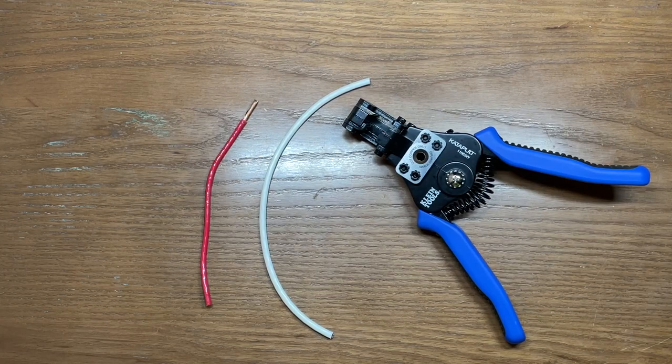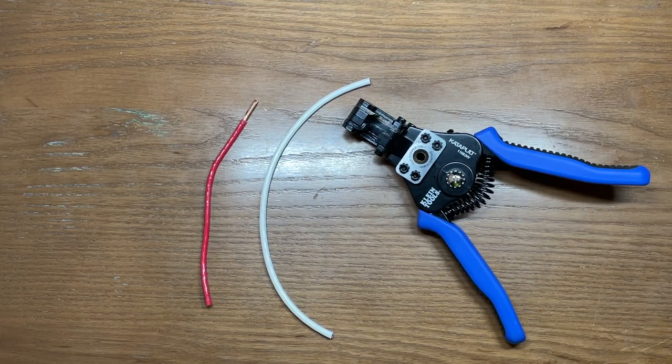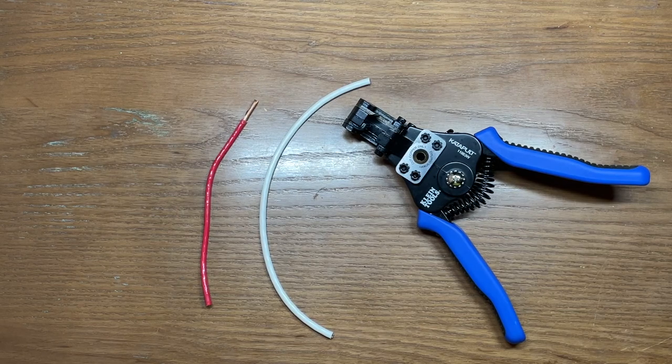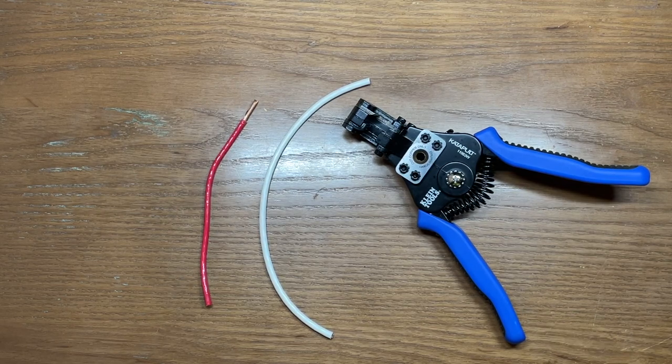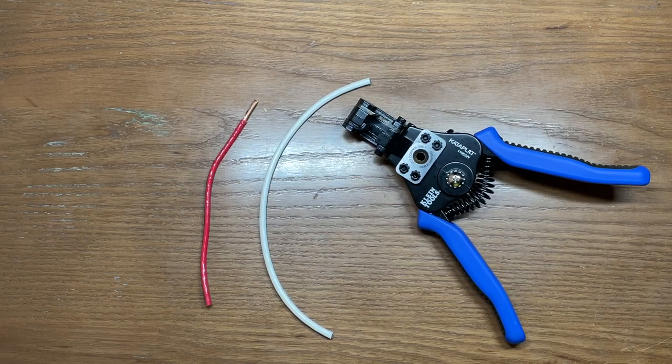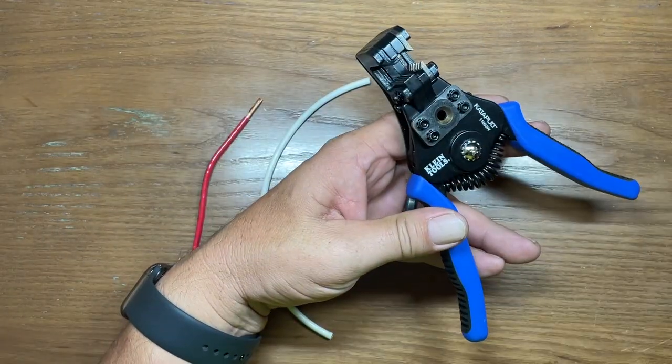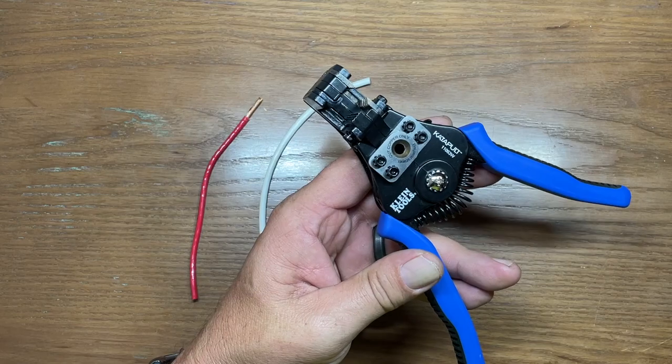Welcome back to the Tool Crib. Today we are going to be looking at a pretty new set of wire strippers on the market. These are the Klein Catapult, model number 11063W, and these are probably one of the best wire strippers I've ever used.